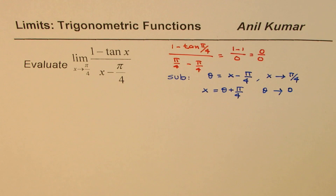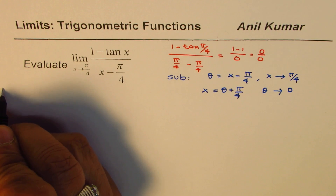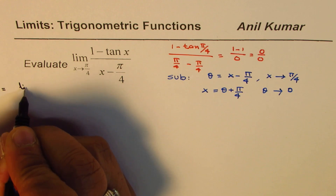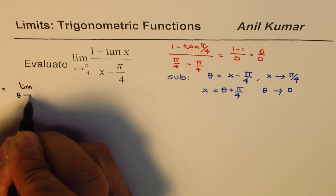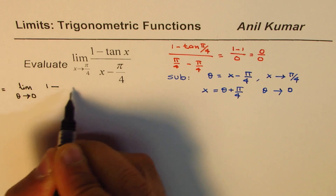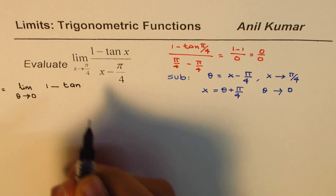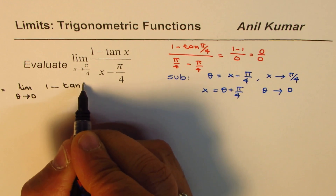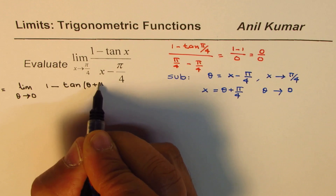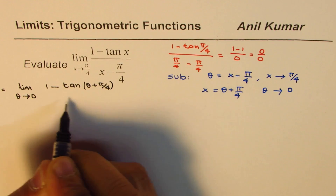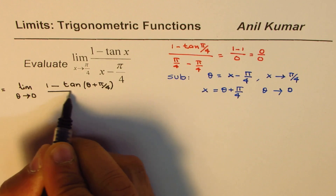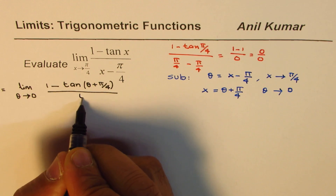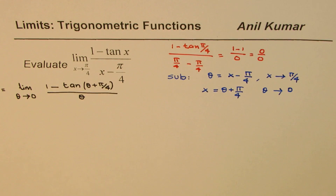With this substitution, we can rewrite the expression as: limit as θ approaches 0 of [1 - tan(θ + π/4)] divided by θ.